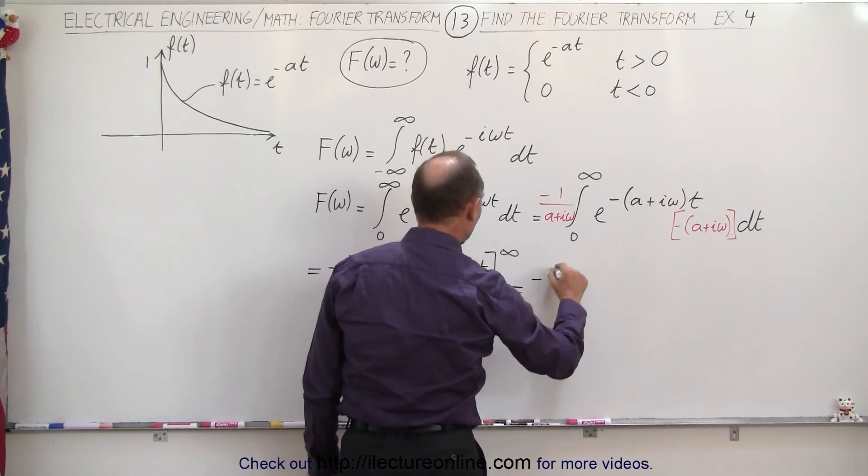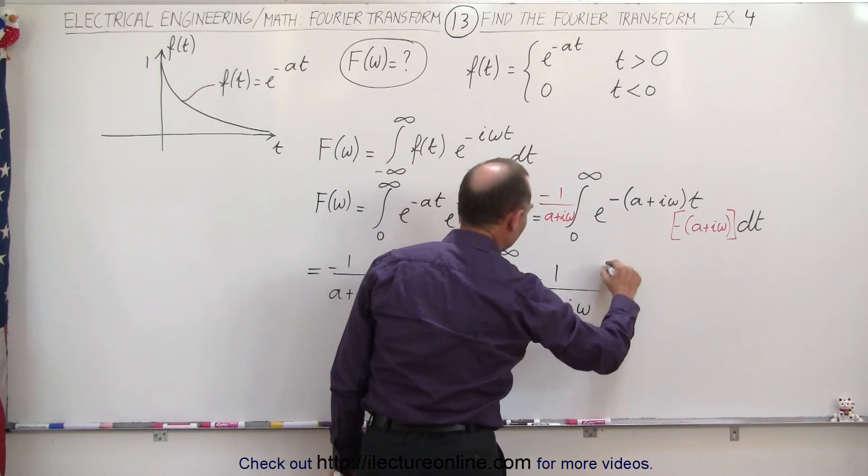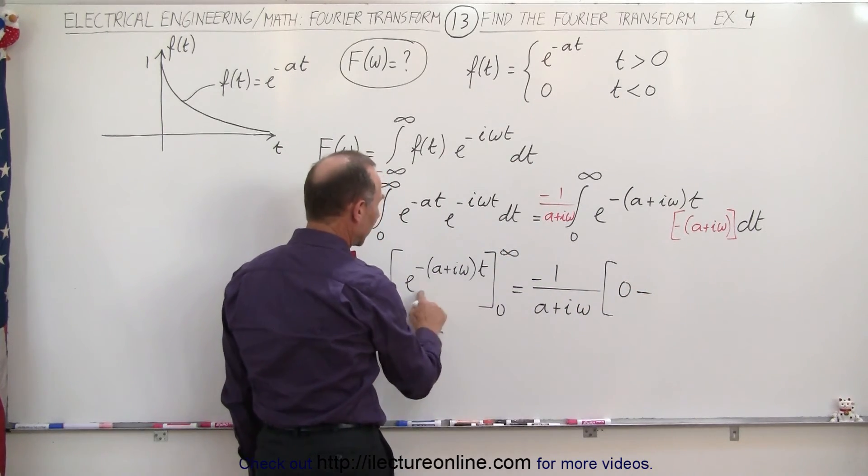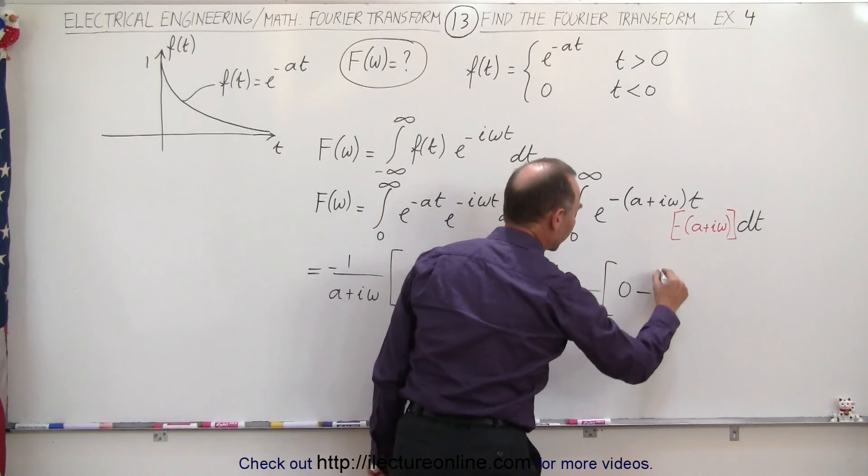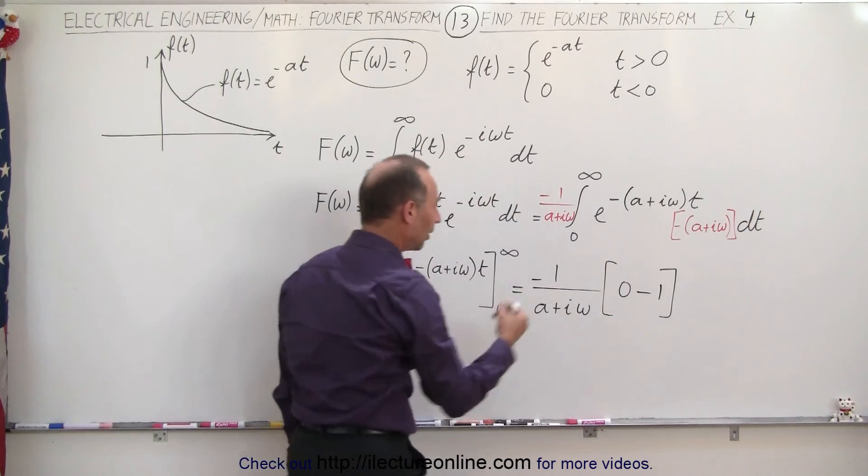So this becomes equal to minus 1 over a plus i omega times 0 minus - now we're plugging in the lower limit - e to the 0, which is equal to 1. And so we have this minus 1 times the minus 1 up here becomes a plus 1.